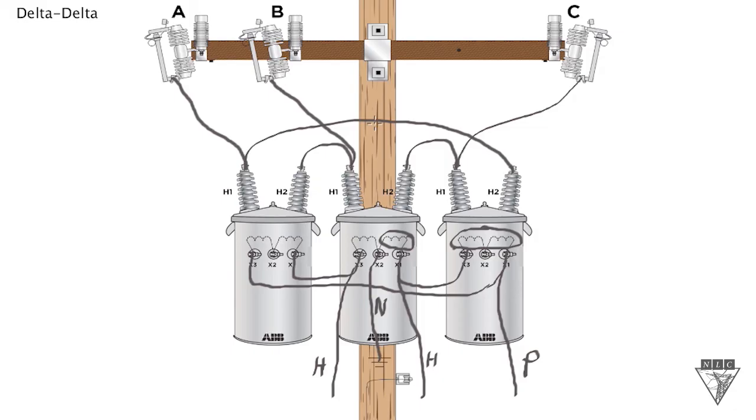Another advantage with a delta secondary is you can use it to, if you have one transformer that fails, you can hook it up with just two transformers. It's a temporary service. Keep in mind it's only 57.7 percent as efficient if you do this, so you'd only want to use it for temporary purposes.